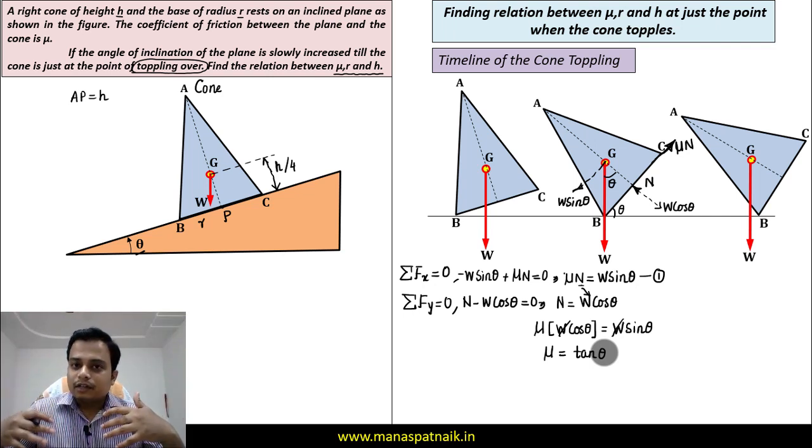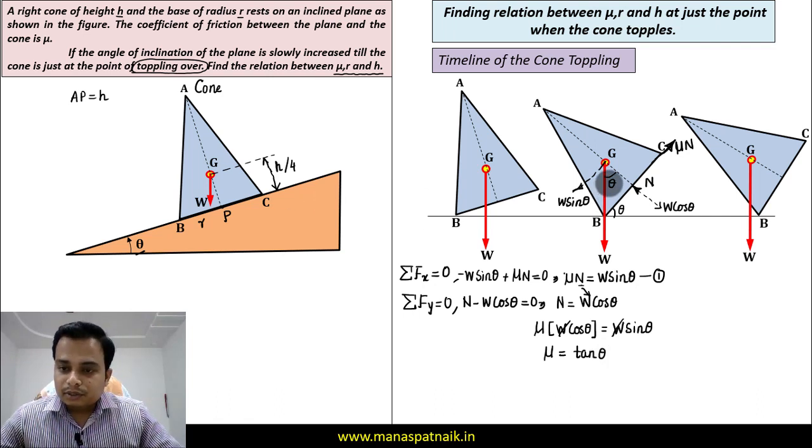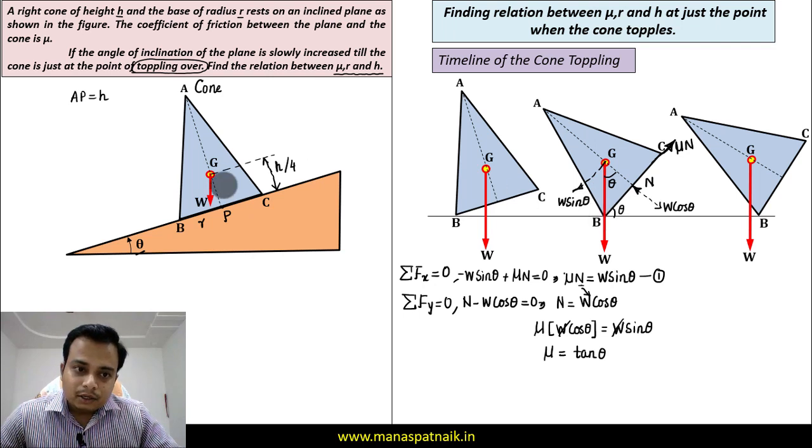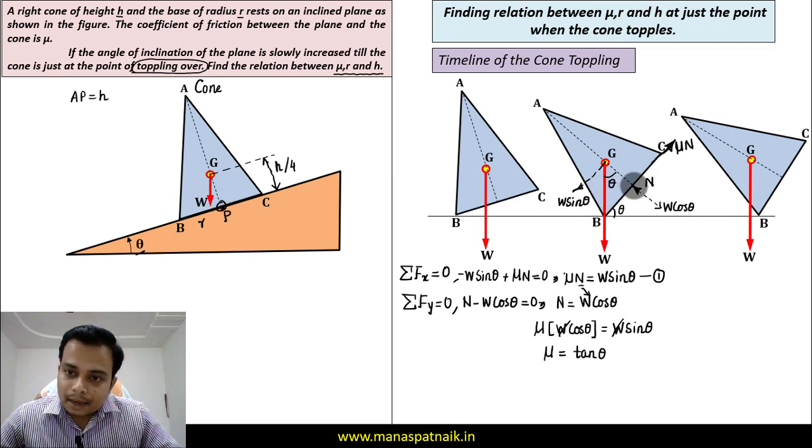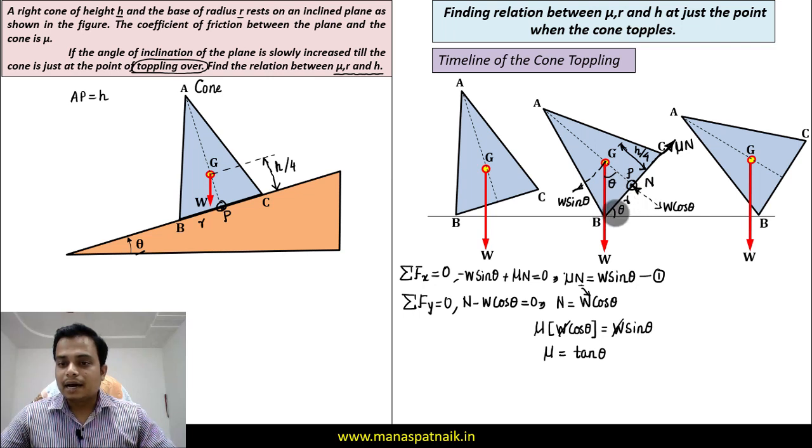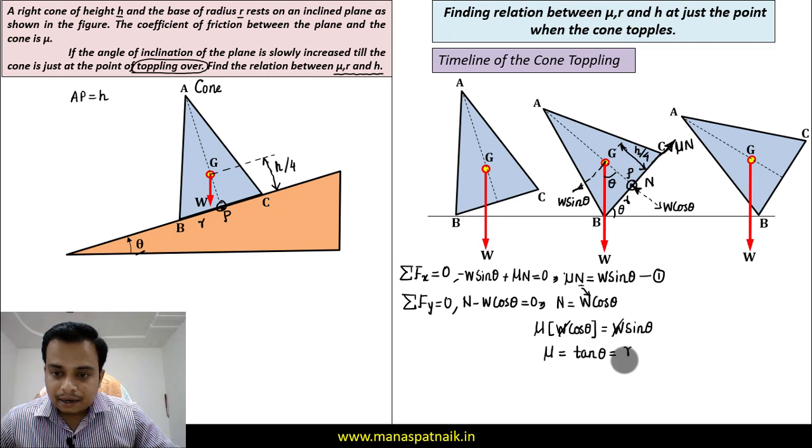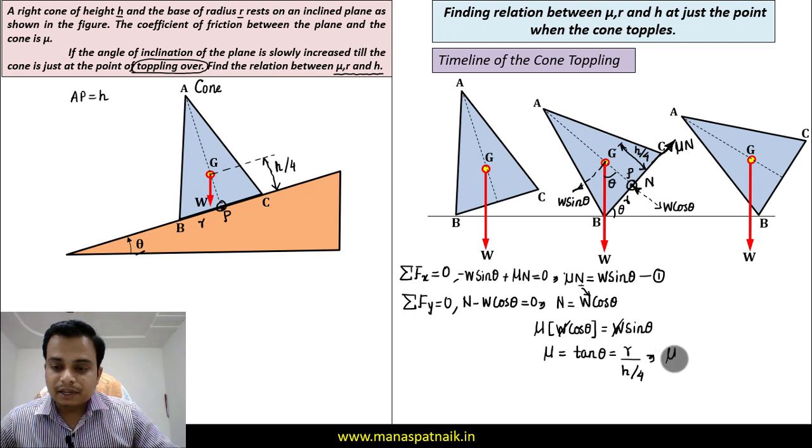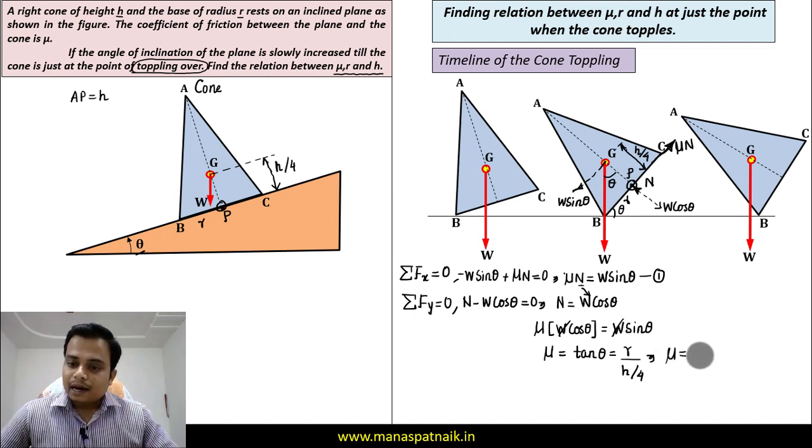Can we transform tan theta into some other variable in terms of r, in terms of h? Yes, that can be done. Let me show you how. This is theta from this point B to let's say this point P. BP is nothing but radius r, and this from G to N, this distance is h upon 4. So if I just apply tan theta, it is going to be equal to r divided by h by 4. So tan theta can also be written as r divided by h by 4. Here we have it, the final relationship between coefficient of friction μ and r, the radius, and the height of the cone: μ = 4r/h. Done and dusted.